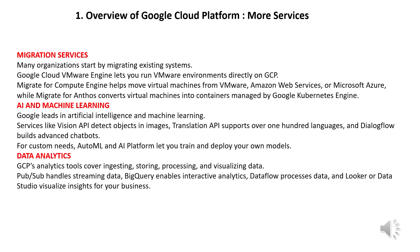GCP offers a wide range of services beyond just compute, storage, and networking. Many organizations start by migrating existing systems. Google Cloud VMware Engine lets you run VMware environments directly on GCP. Migrate for Compute Engine helps move virtual machines from VMware, AWS, or Microsoft Azure, while Migrate for Anthos converts virtual machines into containers managed by Google Kubernetes Engine.